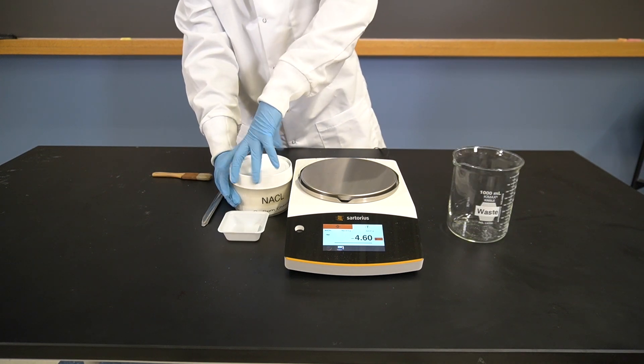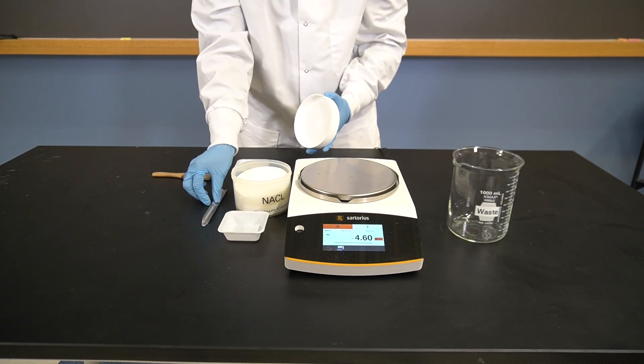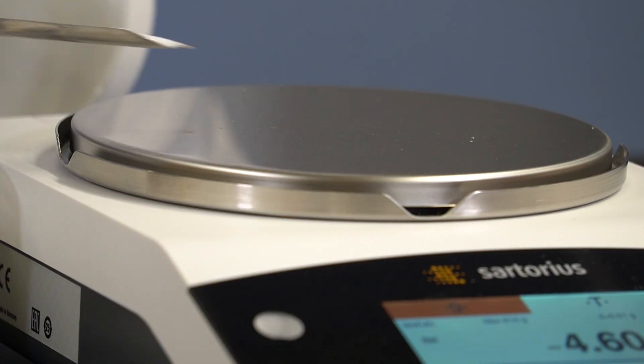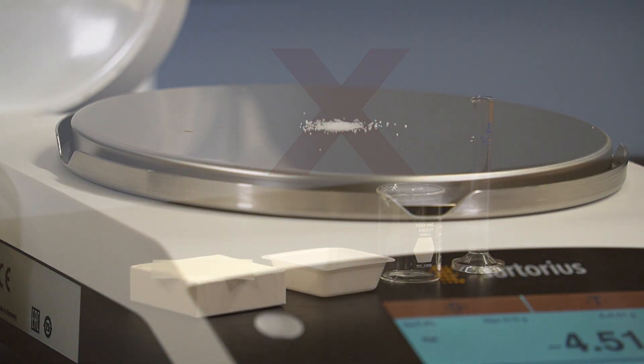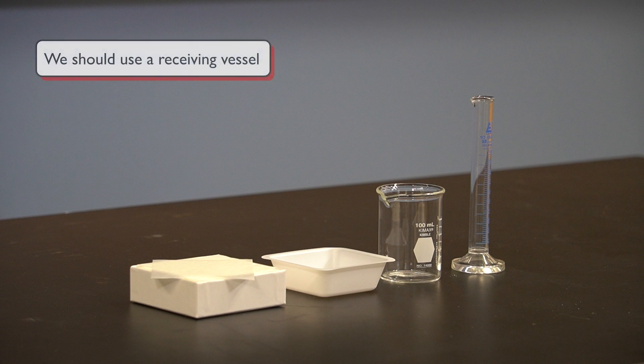One important rule to remember is to never add the sample directly onto the balance pan. This could cause damage to the instrument. Instead, we should use a receiving vessel to hold the sample during the mass measurement.